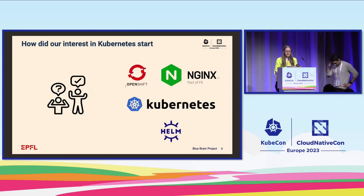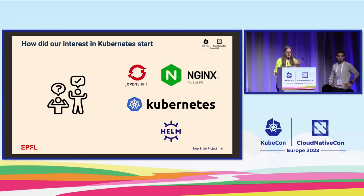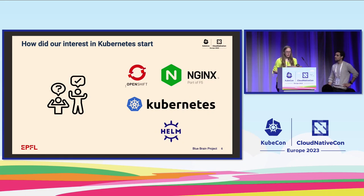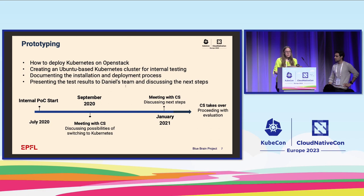How did our interest in Kubernetes start? Within my team we were using OpenShift, which was the organization's container platform, and in the setup we had there were some features that were missing — for example, flexible ingress configuration as nginx was doing it, and using Helm charts was something we wanted to do but at that point it was not possible. We started realizing, together with the developers, that vanilla Kubernetes might be a good solution for us. So we started a bit of prototyping and figuring out how to deploy Kubernetes on OpenStack, and started creating an Ubuntu-based Kubernetes cluster for internal testing.